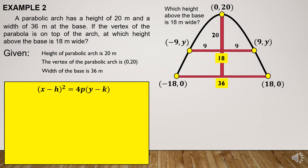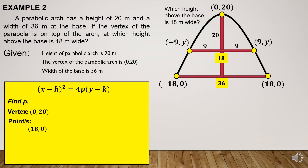We will now use the equation: the quantity (x minus h) squared is equal to 4p times (y minus k). Since the opening of the graph opens downward, it is expected that the value of p is negative, or less than 0. Let us now find the value of p from the given vertex with coordinates (0, 20) and the given endpoints of the base, (-18, 0) and (18, 0), but we will only need one point. At this example, I choose (18, 0) as the values of x and y.